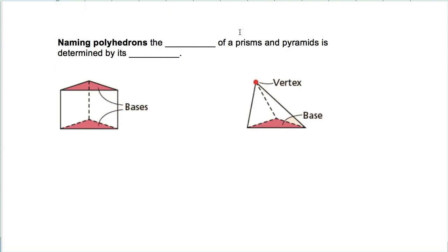Let's take a look at what we have down below. Sometimes naming polyhedrons is incredibly difficult. No, it's not. Let's just make this very simple. The naming of a prism or a pyramid is determined by its base.